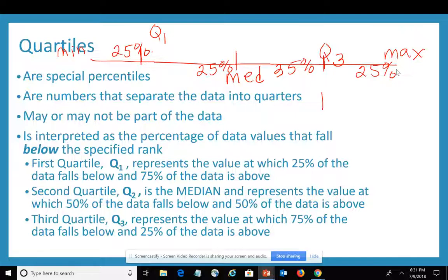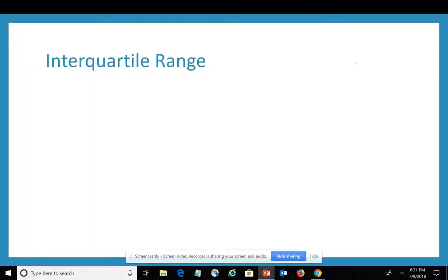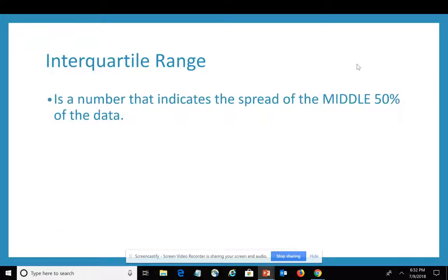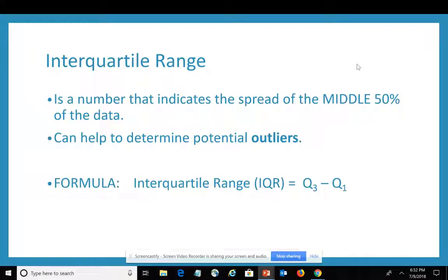We also look at the relationship between quartile one and quartile three. That represents the middle 50% because from quartile one to the median is 25%, then from the median to quartile three is another 25%, or a total of 50%. This region from quartile one to quartile three is called the interquartile range and it represents the spread of the middle 50% of the data. The interquartile range is used to help us determine potential outliers. The formula for calculating the interquartile range, abbreviated IQR, is quartile three minus quartile one.